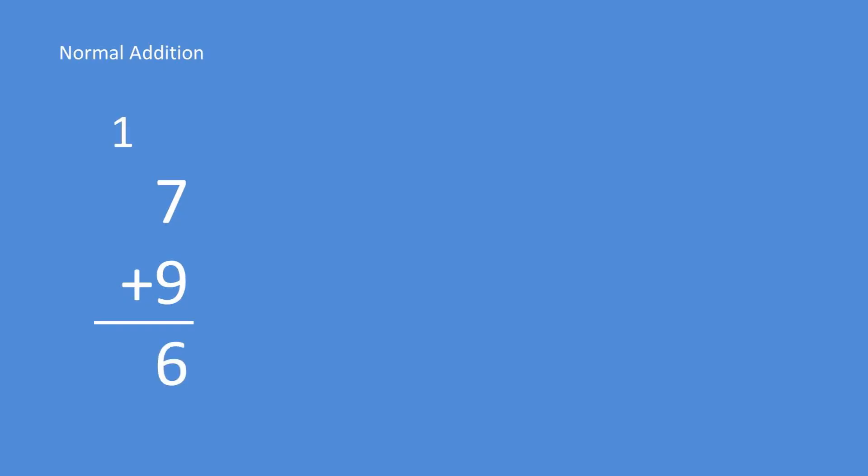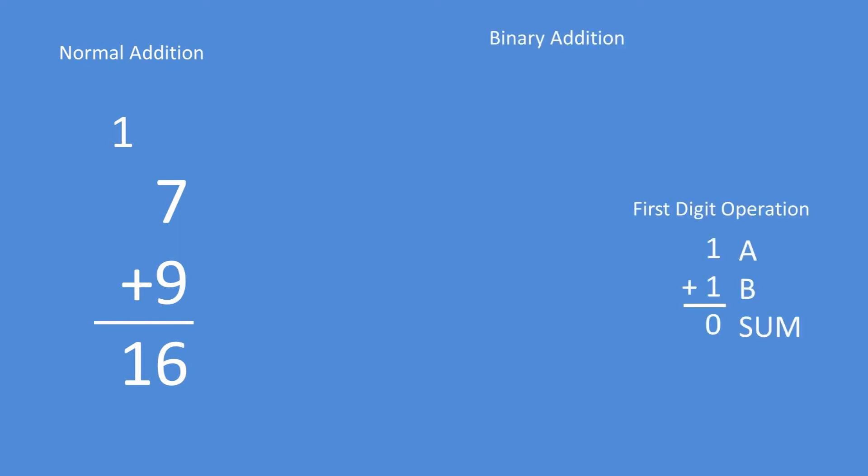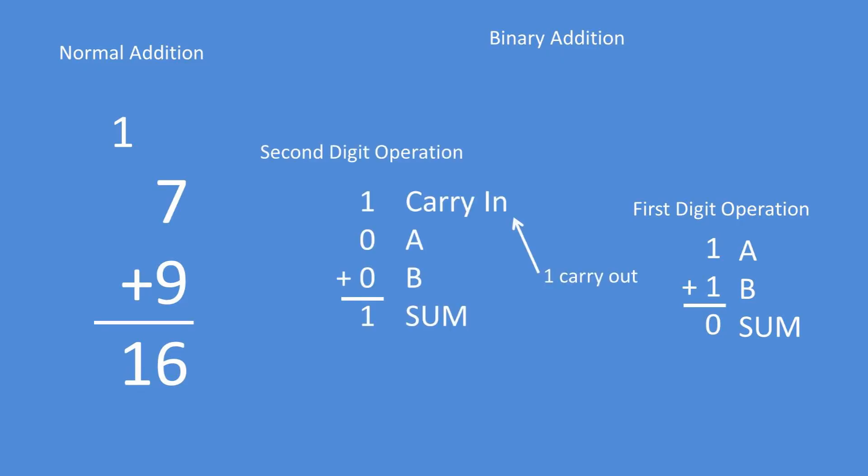Now to explain the binary addition, let's first go over normal addition of seven plus nine. We would take seven plus nine, which equals a six in the first digit, and then we would carry over a one to the second digit — this one drops down to give us a 16. So now to do binary addition of two inputs that have a value of one bit each, we get for the first digit the sum of the two bits equals zero. The one then gets carried over into the second addition, which is the addition of the carry in plus the A input plus the B input equals the sum.